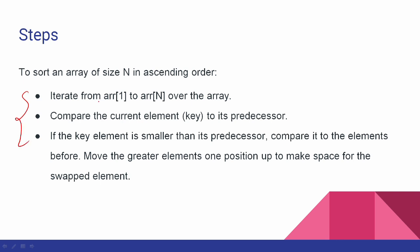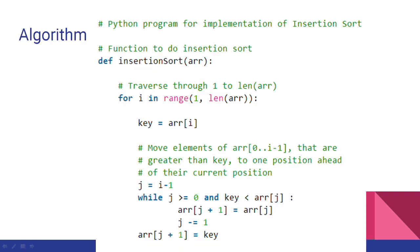Now let's use the pseudo code. Use the array and iterate. The current element's predecessor is the previous element. The key element is the smaller one. Compare the smaller elements, compare the greater elements and move them to the right side. Define insertion sort of array. Use a for loop with range from 1 to length of array (n). The key value is array of i.